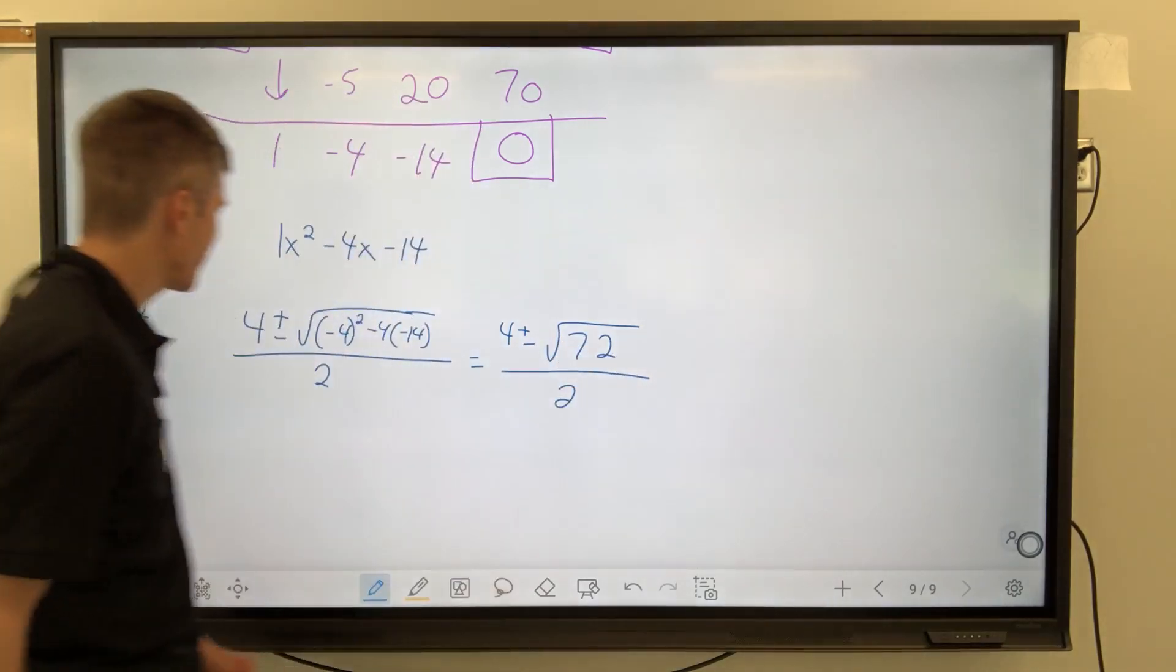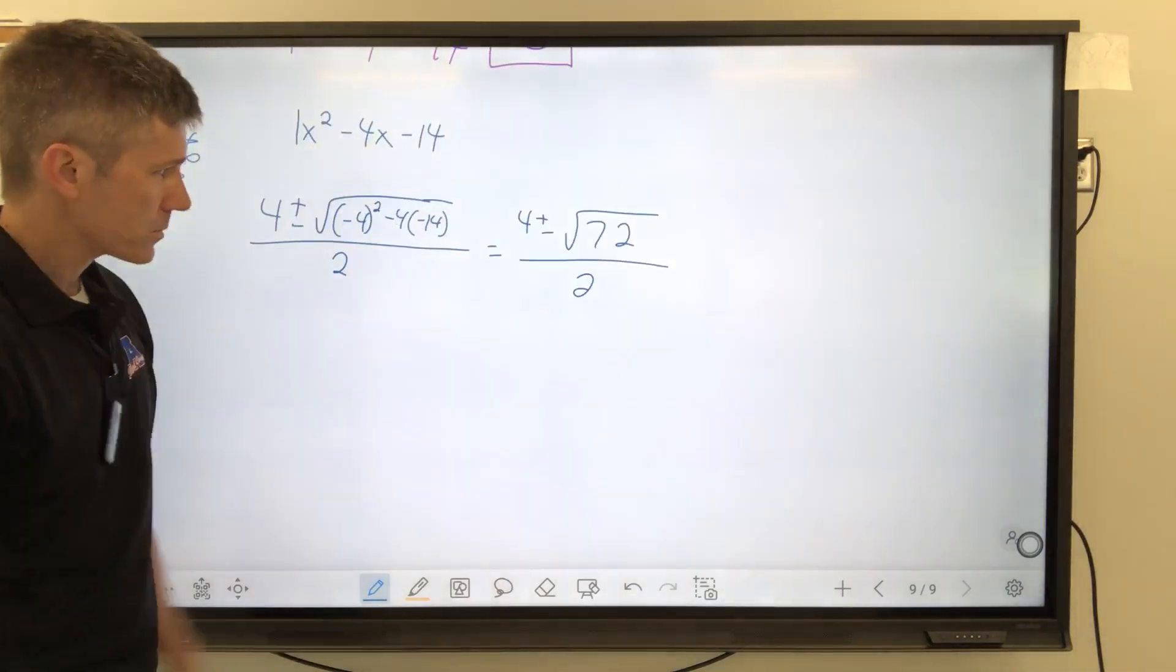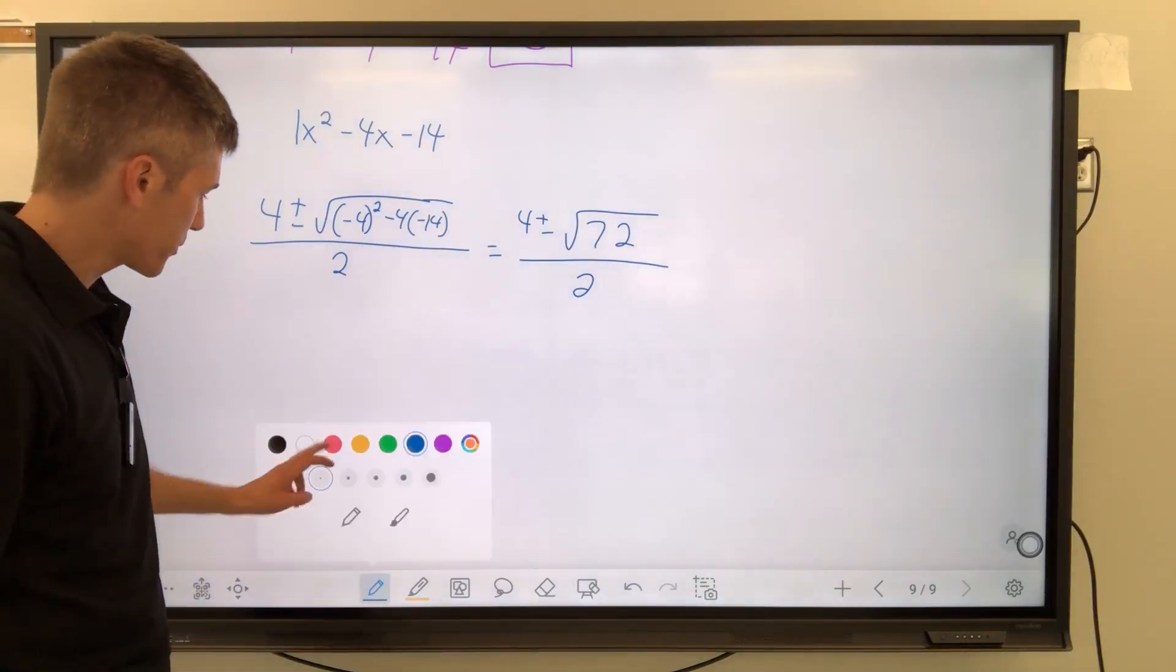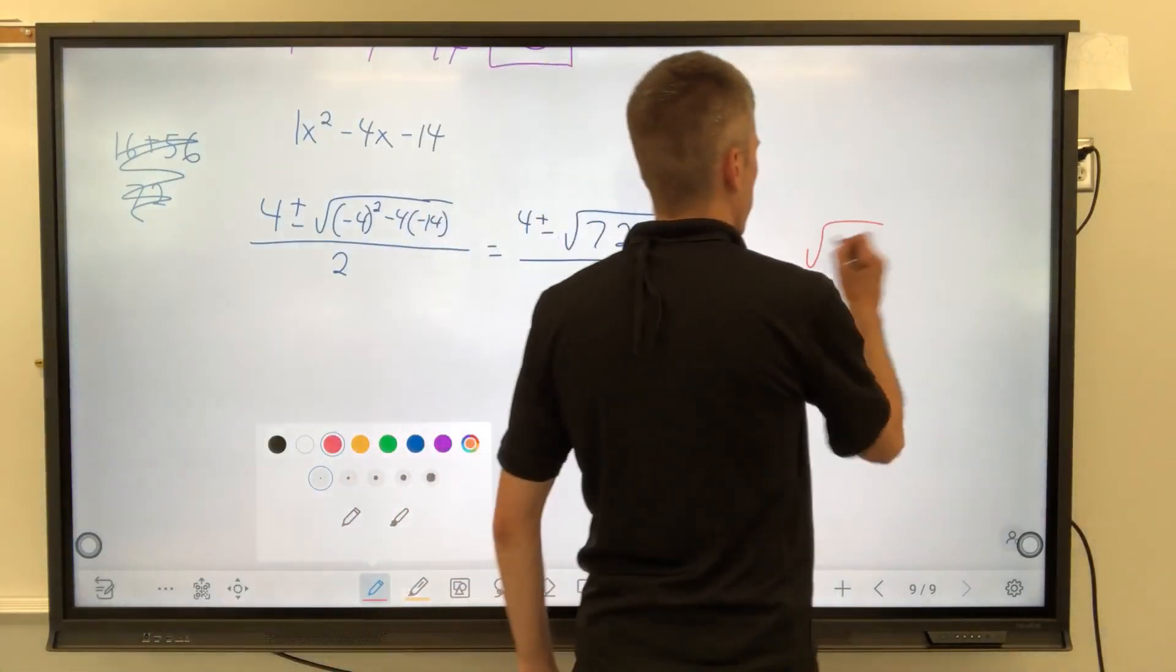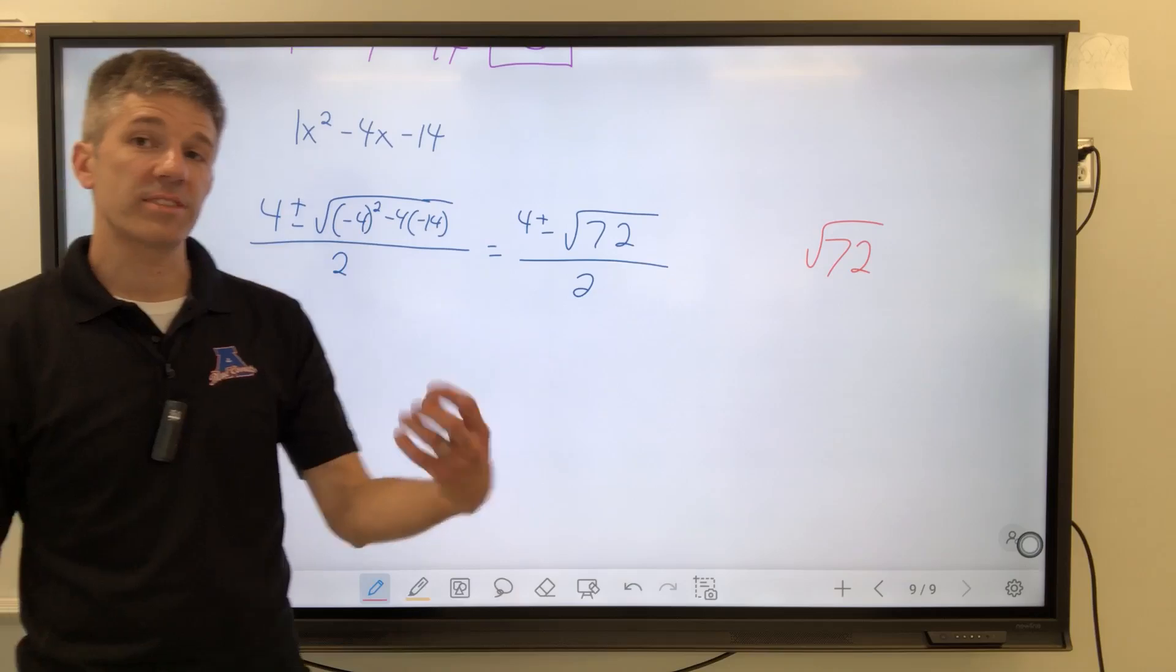All right. Square root of 72. Ooh, a fun one. Fun one. You can ignore that. Ha, ha, ha. Square root of 72. So, let's pause for a second, and then proceed by finding the square root of 72 over on the side or in your head or wherever.